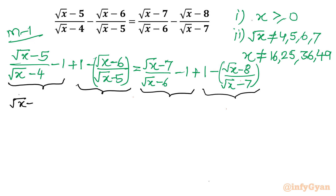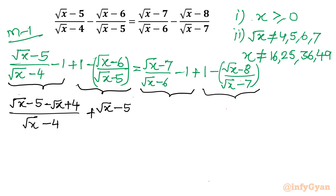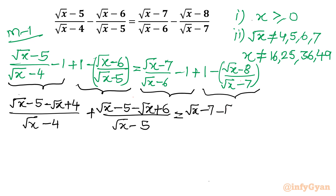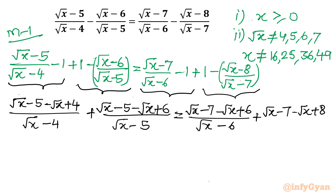I will write (√x − 5 − √x + 4) divided by (√x − 4). For the second combination: (√x − 5 − √x + 6) divided by (√x − 5), equal to (√x − 7 − √x + 6) divided by (√x − 6). And the last term: (√x − 7 − √x + 8) divided by (√x − 7).